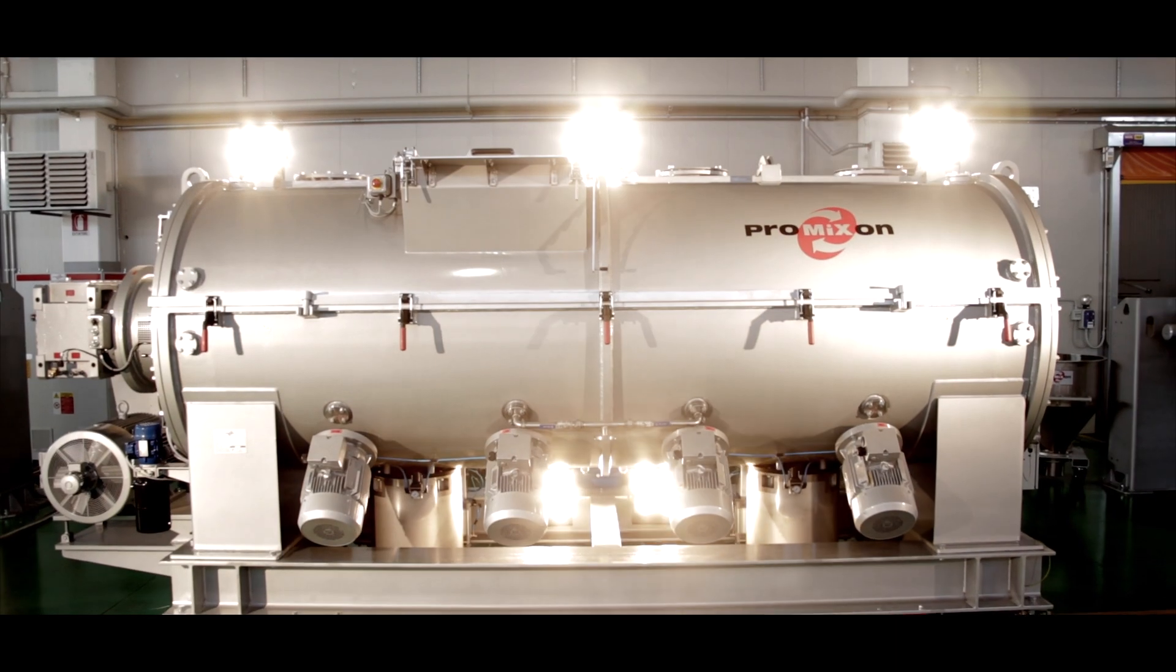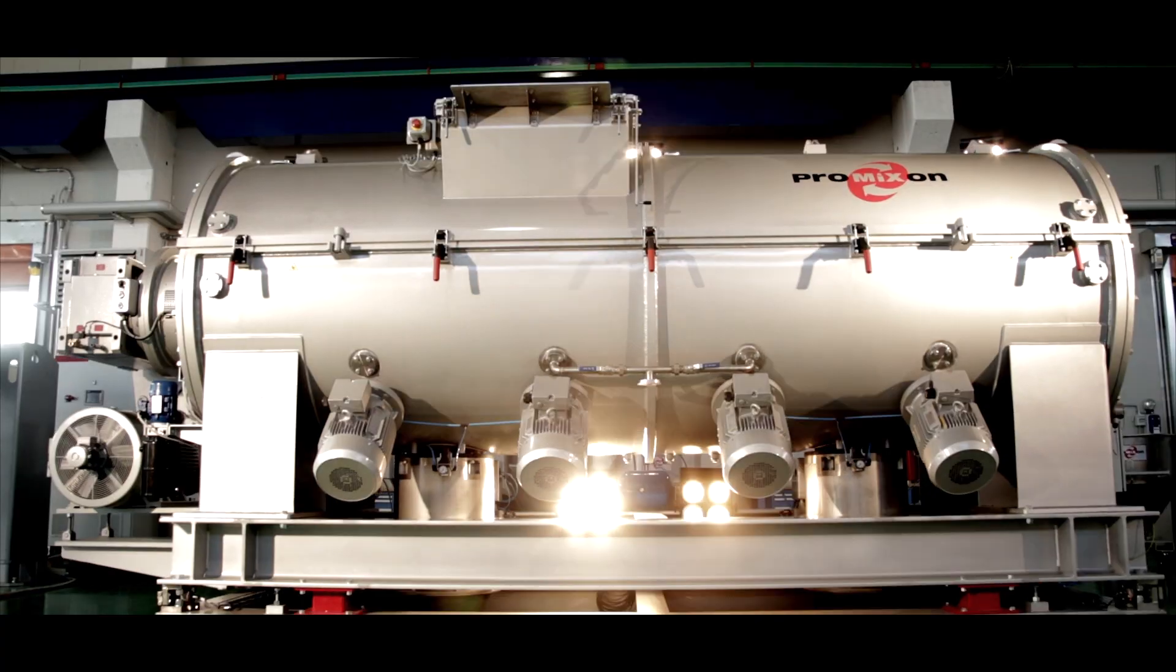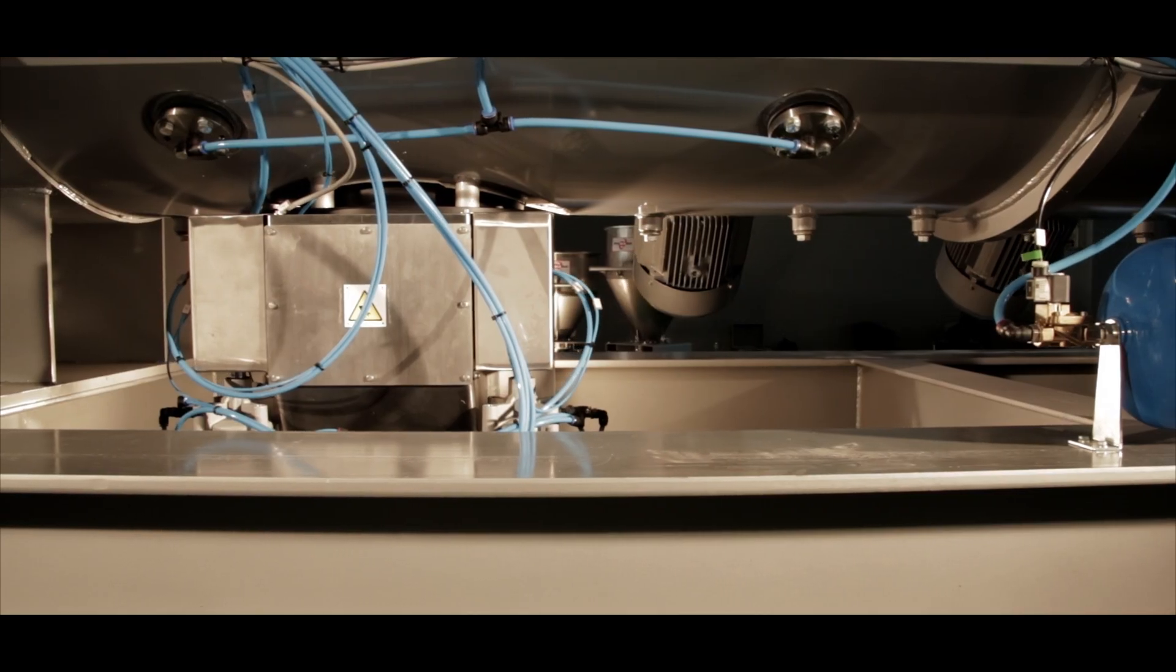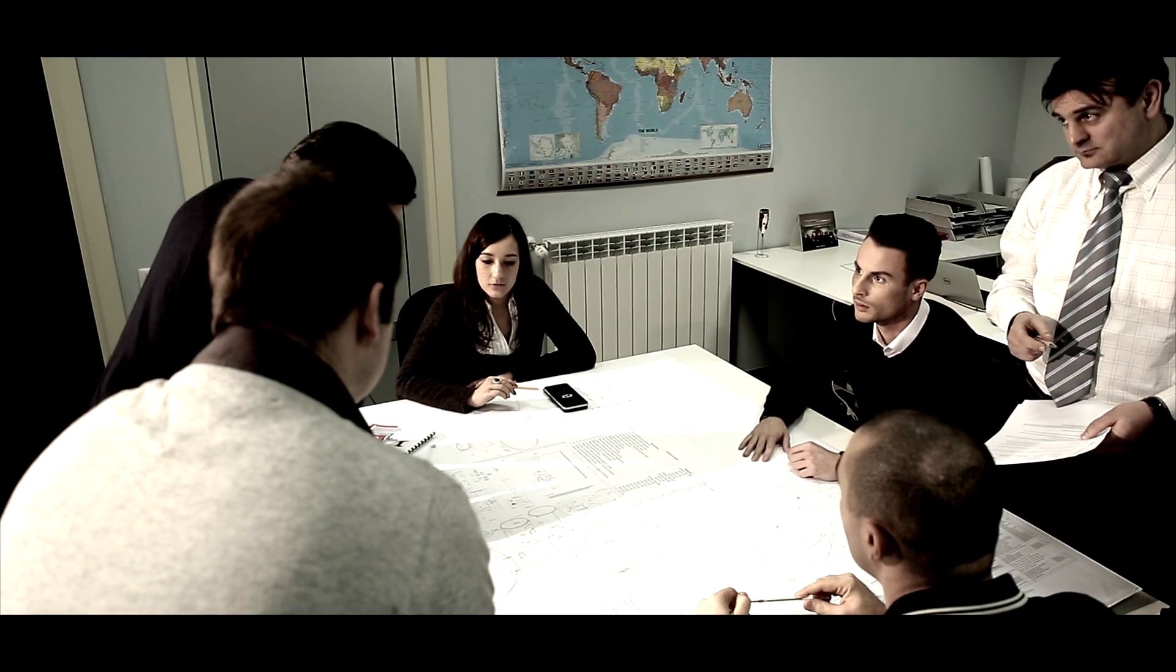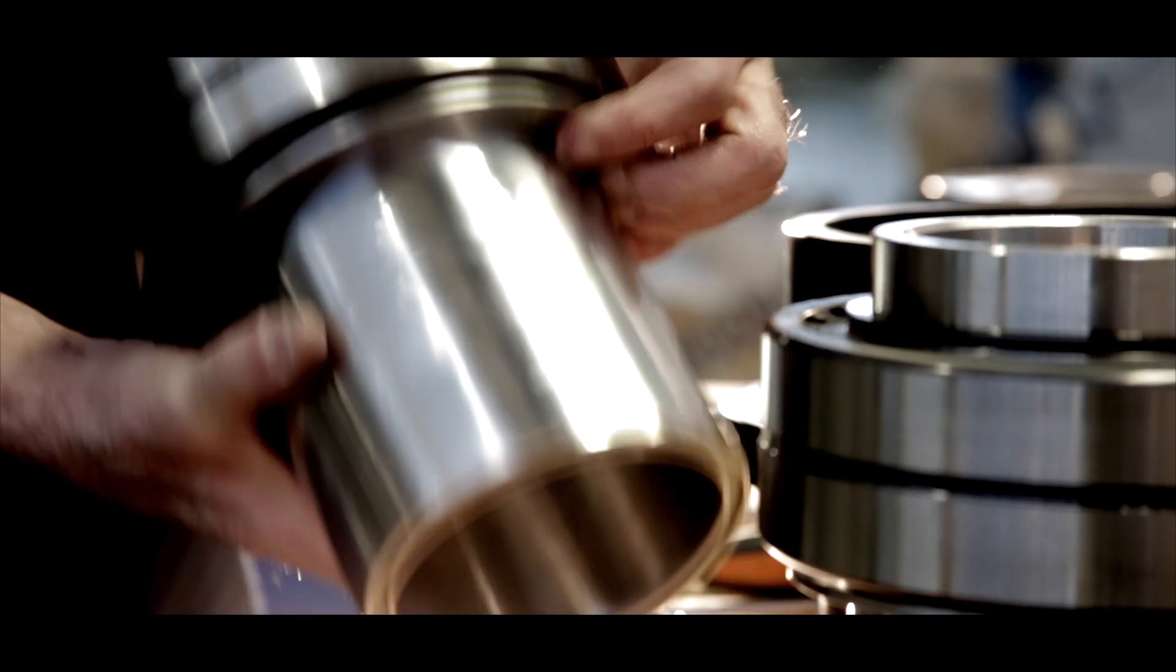HMX Horizontal Mixers are available in different sizes, ranging between 100kg per batch to 5000kg per batch as a standard. ProMixOn can provide tailor-made projects for much larger batch sizes.